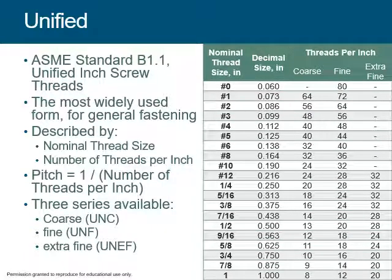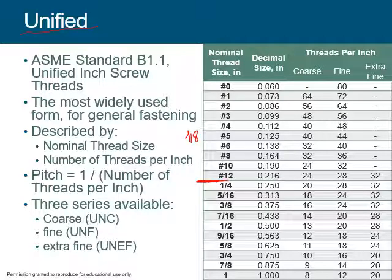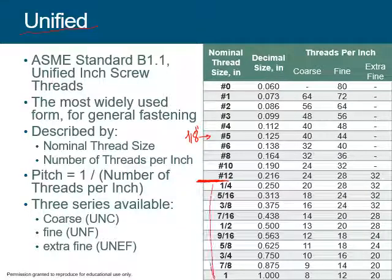Here is a summary of all the unified thread sizes. Up to a quarter of an inch — less than a quarter inch — we name the thread based on a numbering system from 0 to 12. So 0 is 0.060, 1 is 0.073, and so on. An eighth of an inch is roughly number 5, which is 0.125. Number 12 is shy of a quarter inch at 0.216. For a measured diameter of a quarter inch and above, everything follows the logic of the actual measured diameter size.